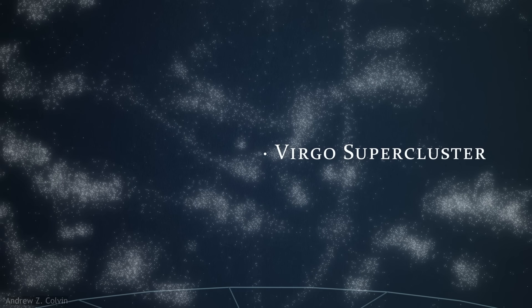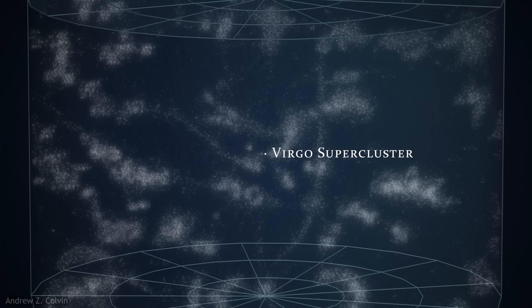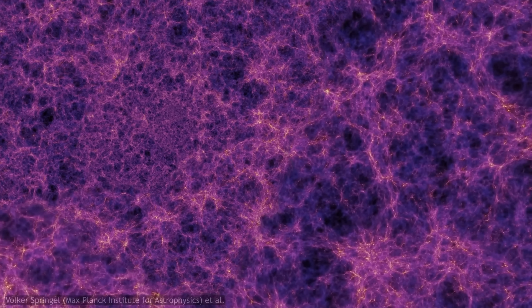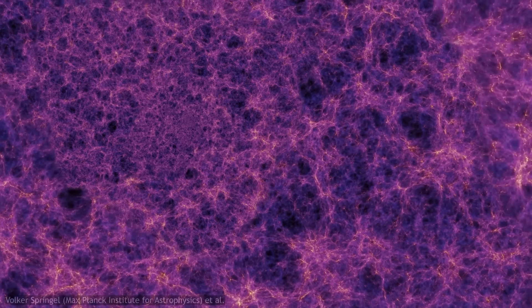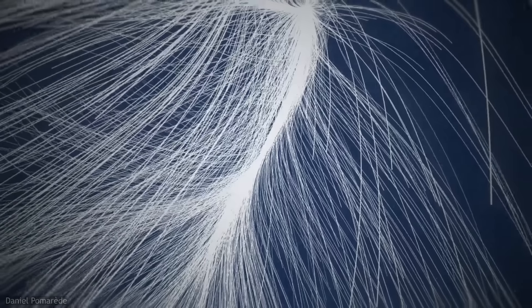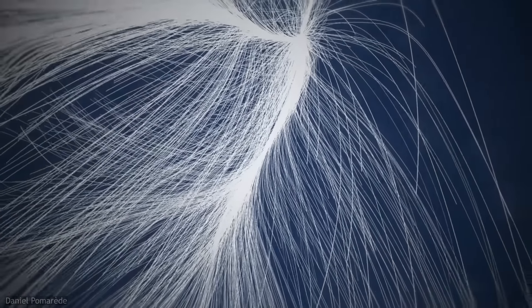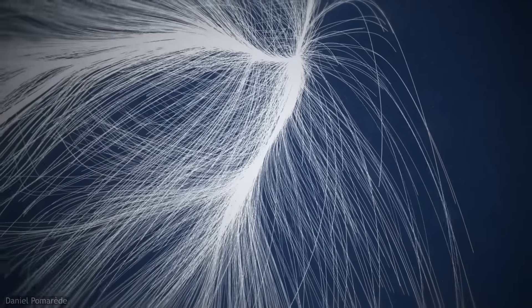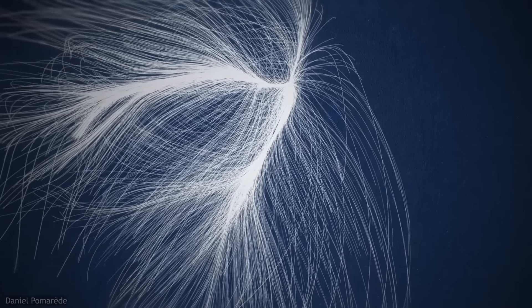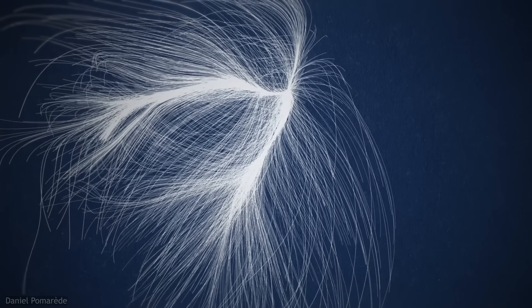But the superclusters will not make it. Laniakea, Shapley, and all the millions of others that twist and wind their way to create the backbone of the cosmic web will not maintain their cohesion. It is simply too late. They simply did not have time to pull themselves close enough together before the forces of dark energy began their work 5 billion years ago.